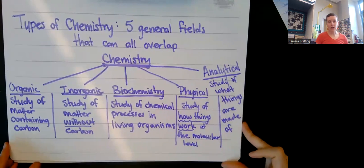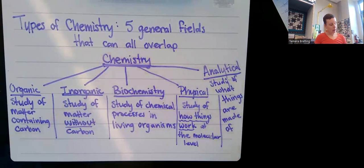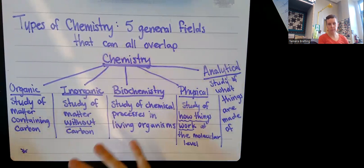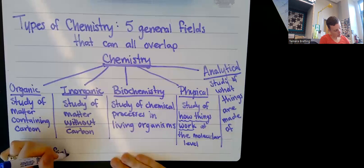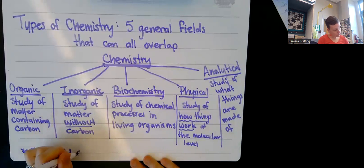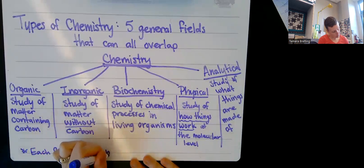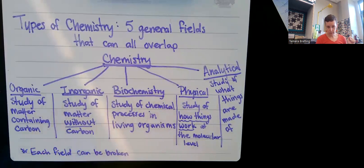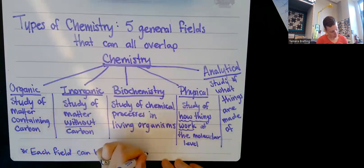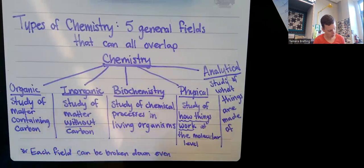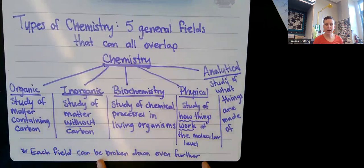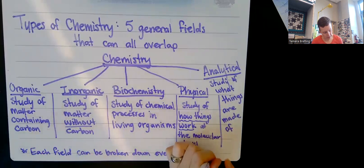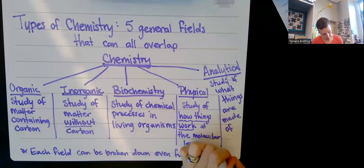As we said earlier, they can all overlap. Each field can be broken down even further, and that's where you see the overlapping. Here's a really good example: with a brand new virus like COVID-19, the first step is asking what is it made of — that's analytical chemistry. Then you figure out how it works inside the body to cause illness — that's partly physical chemistry, but also biochemistry because it's a chemical process inside a living human.